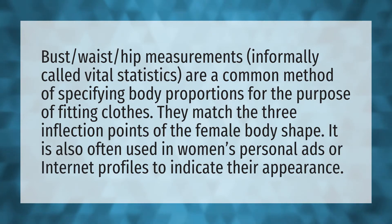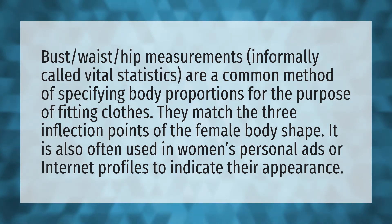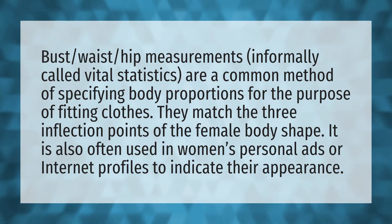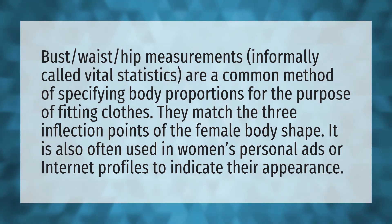Bust, waist, hip measurements, informally called vital statistics, are a common method of specifying body proportions for the purpose of fitting clothes. They match the three inflection points of the female body shape. It is also often used in women's personal ads or internet profiles to indicate their appearance.